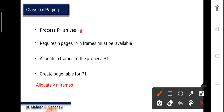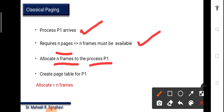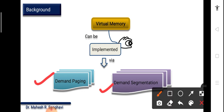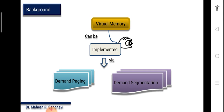Suppose process P1 arrives and requires N pages. We must have N frames available, so N frames will be allocated to P1 and an entry will be created in the page table. It will allocate less than N frames — this we need to understand. Virtual memory can be implemented using either demand paging or demand segmentation.